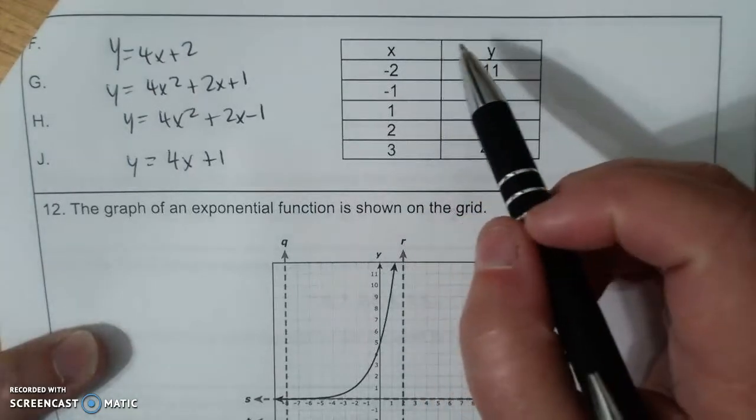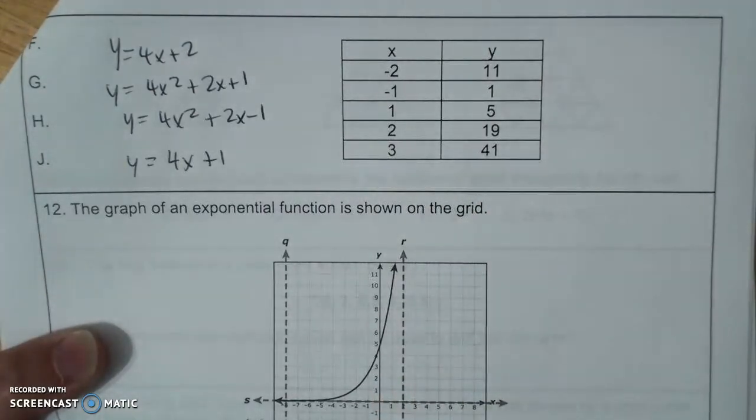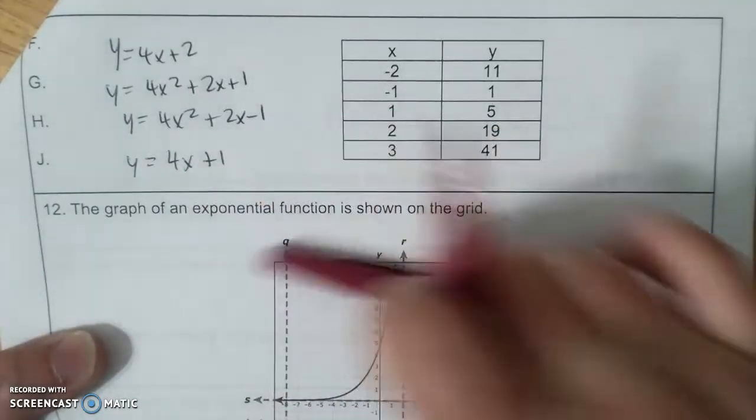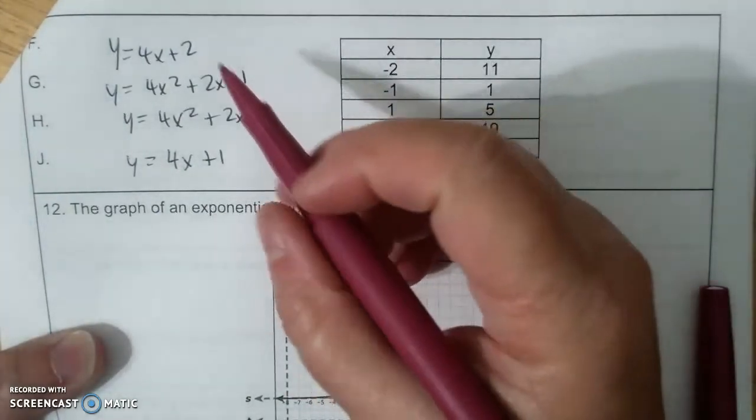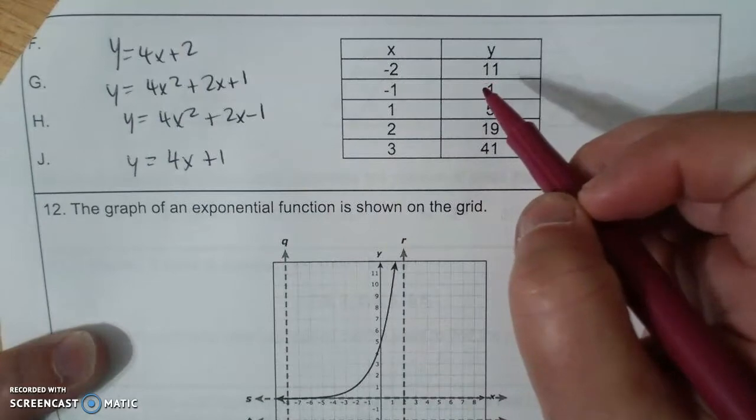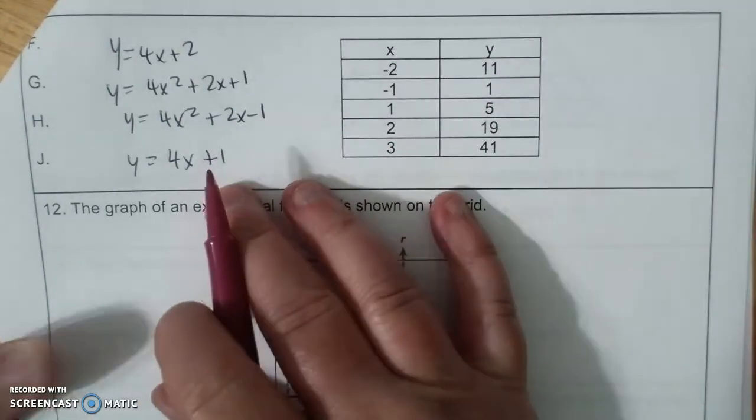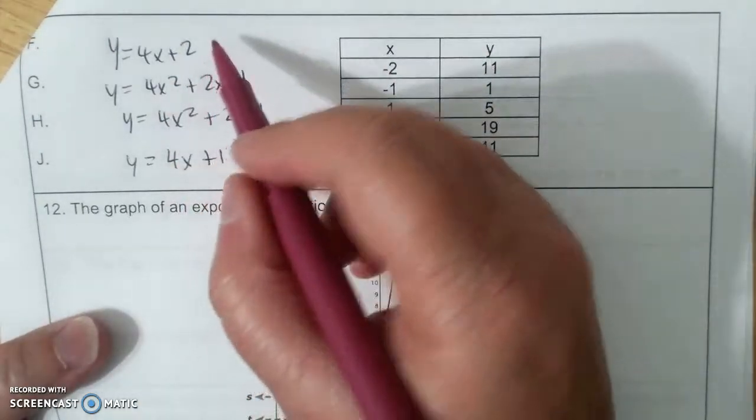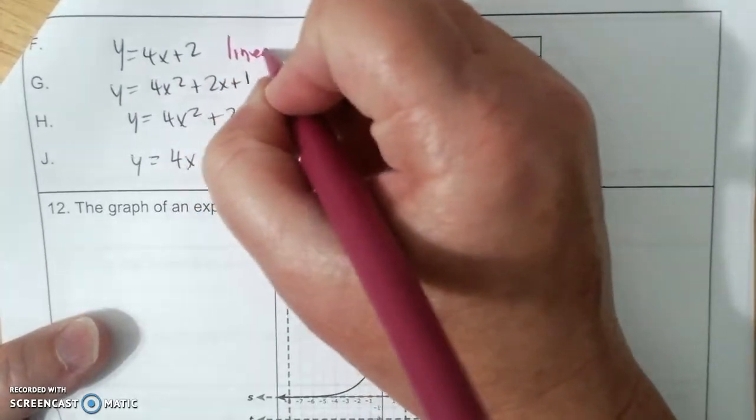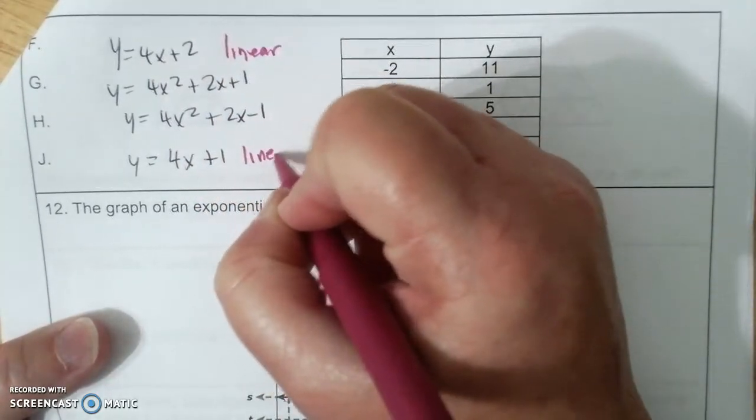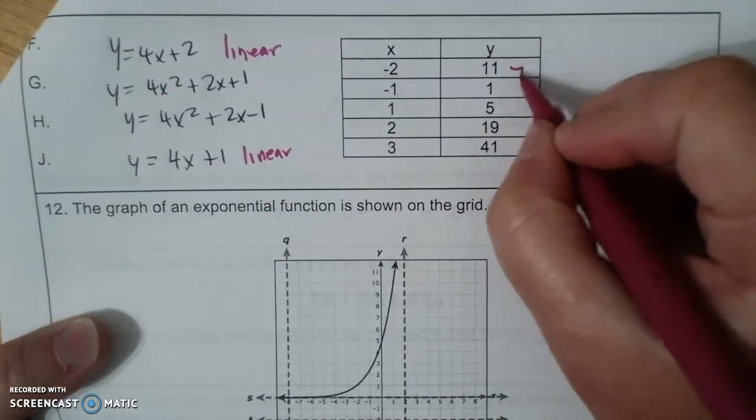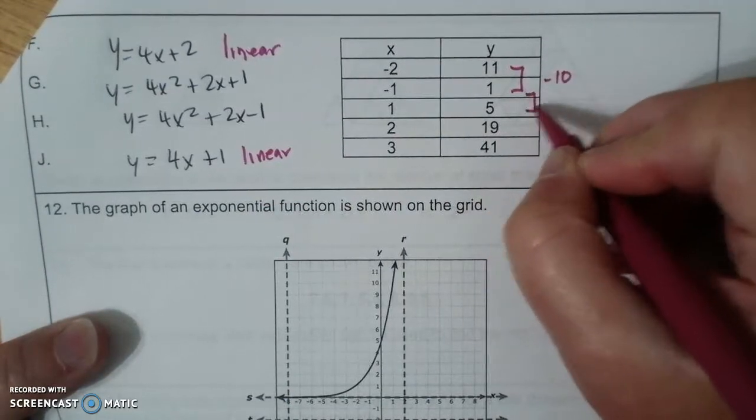Continuing on with the review, you have a table here that gives you four functions and asks you to match the function with the table. A couple of things that I'm going to do is first notice that y = 4x + 2 is linear and y = 4x + 1 is linear, so I'm going to check minus 10 plus 4 plus 15.